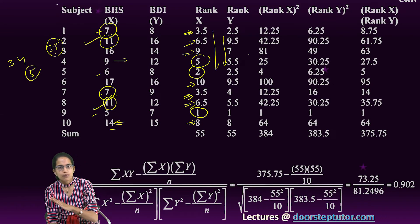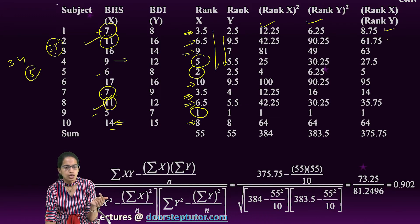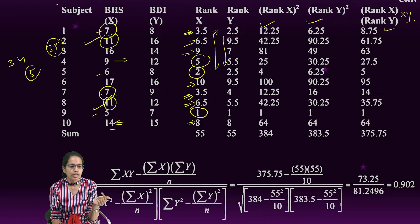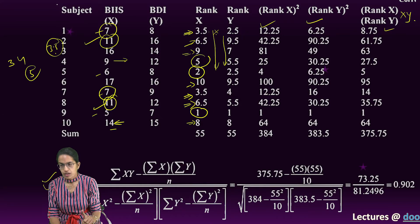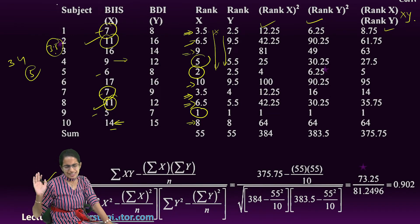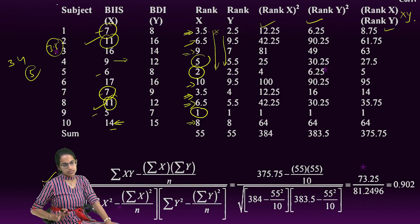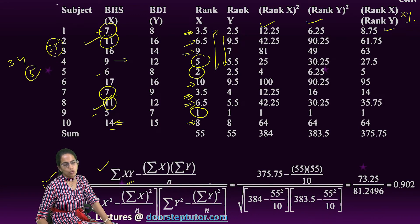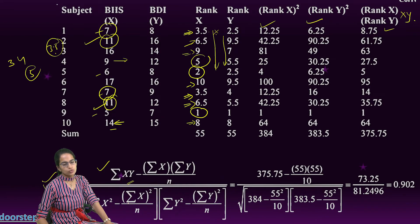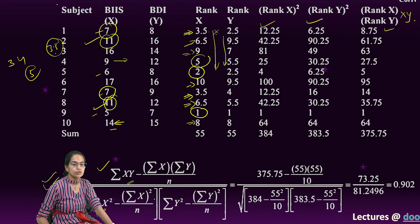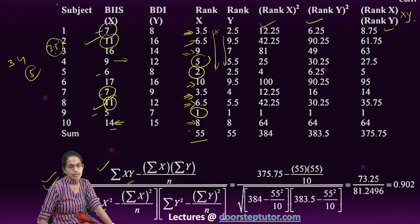I have now ranked the data for X and similarly for Y. I square the ranks and take the summation of the product of ranks X and Y — for example, 3.5 multiplied by 2.5. In the case of tied ranks, the formula changes: instead of just using differences, we use summation of Rx times Ry, minus (summation of Rx times summation of Ry) divided by n, all divided by the square root of [summation of Rx² minus (summation of Rx)² divided by n].